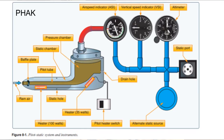Let's look briefly at a diagram. This is straight out of the Pilot's Handbook of Aeronautical Knowledge. The pitot tube points forward and as the speed increases on takeoff, ram air pressure increases while the static air remains the same. This is reflected on the airspeed indicator as increasing speed.